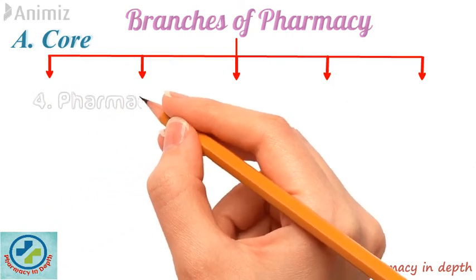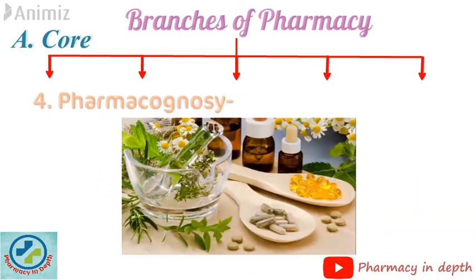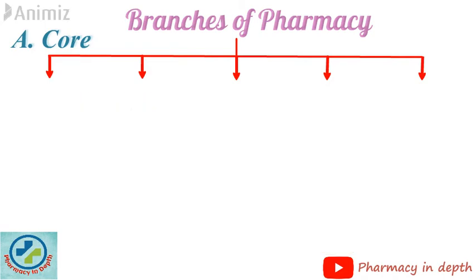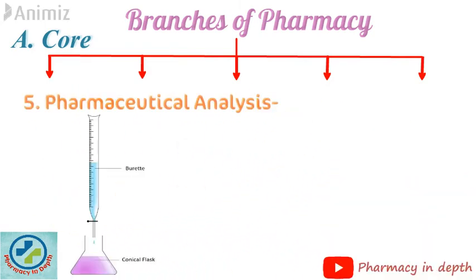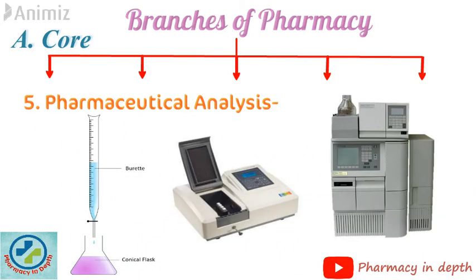The fourth branch is Pharmacognosy, in which we study about extraction of drugs from medicinal plants. And the fifth branch is Pharmaceutical Analysis.